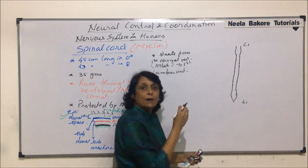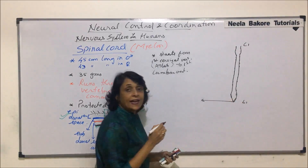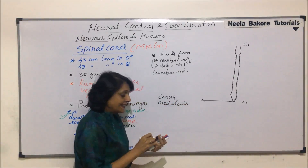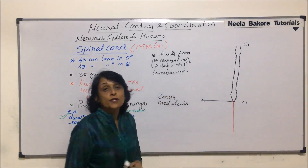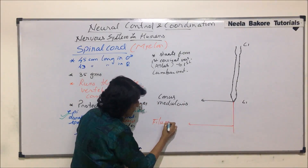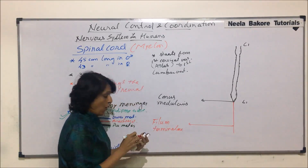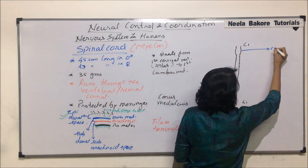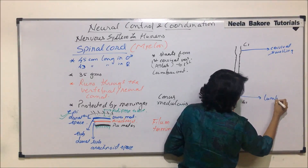The ending part in the lumbar one region is known as the conus medullaris. Beyond that, it extends up to the last vertebra in the coccyx region in the form of a non-nervous strand known as the filum terminale. There are two swellings: the cervical swelling and the lumbar swelling.